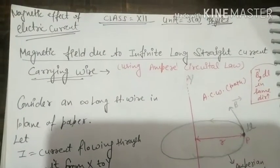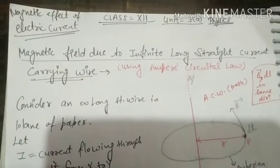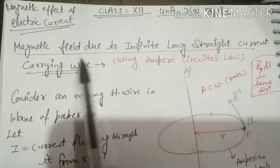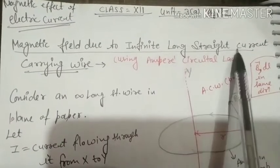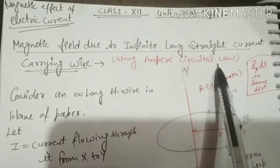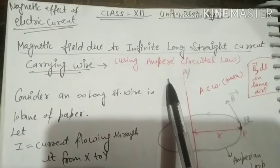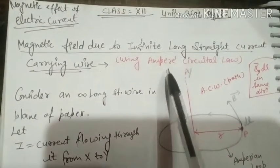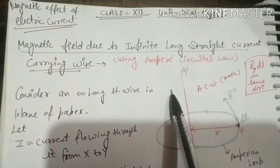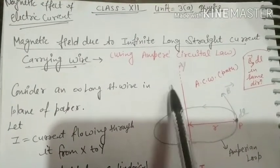Friends, good morning. Today we are doing the applications of Ampere's circuit law. Here we have to find the magnetic field due to an infinite long straight current-carrying wire. We are using Ampere's circuit law. If we have a finite wire, we will use both Ampere's circuit law and Biot-Savart law. But if you take this infinite wire, we will use AC law.